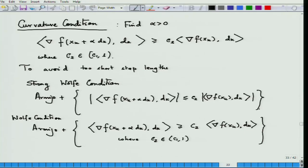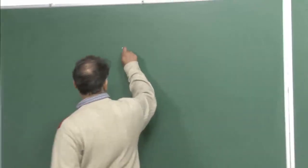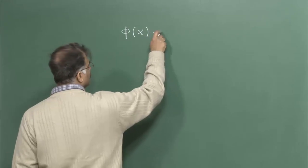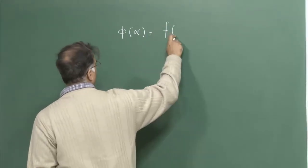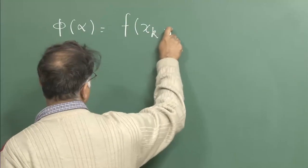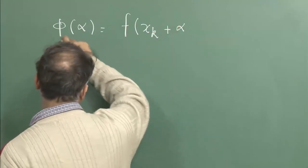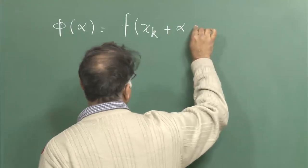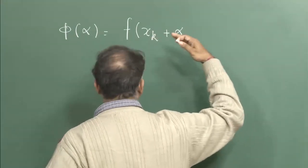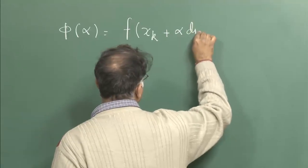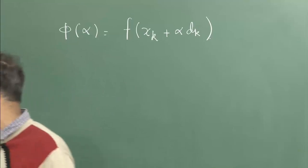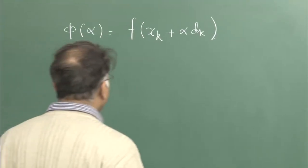It is important to understand the function phi(alpha) once again. Let us look at this function phi(alpha) which we introduced in the last lecture for a given k. We can write phi_k(alpha) as well, but let us just write phi(alpha) since we know we are analyzing things at the k-th iteration and d_k is the descent direction. Now, what happens if I put alpha equal to 0? If I put alpha equal to 0 it will become f(x_k).